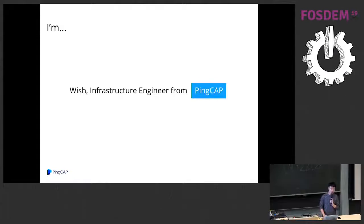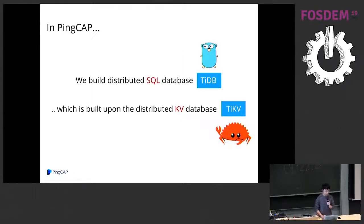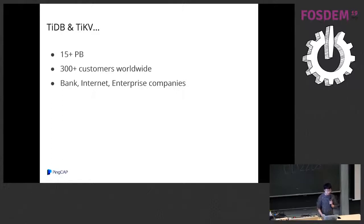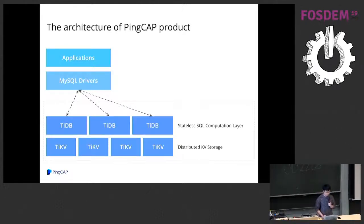Let me introduce myself first. I'm Wish, an infrastructure engineer from PingCAP. You may already know this name if you attended previous lectures. At PingCAP we mainly build two products: a distributed transactional SQL database called TiDB, written in Go, and a distributed transactional key-value database called TiKV, written in Rust. TiDB is just a SQL layer built on top of the KV database, which is the storage layer. Let me introduce the architecture.